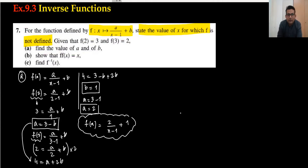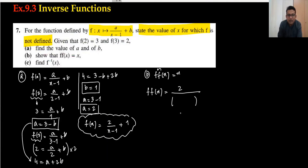Now, part b: show that f(f(x)) equals x. Very simple — I will put the whole equation of f in the place of x in the same equation. So f(f(x)) equals 2 upon, in the place of x I put the whole value, which is 2 upon x minus 1 plus 1. Now we just need to simplify, and when we simplify it should give x.